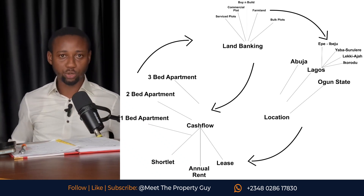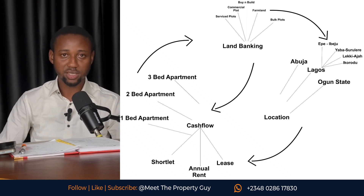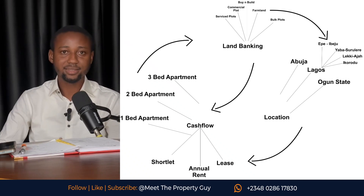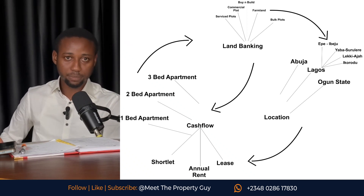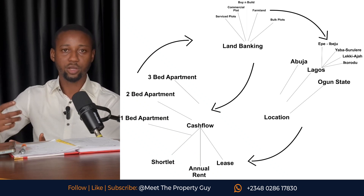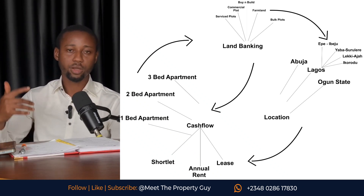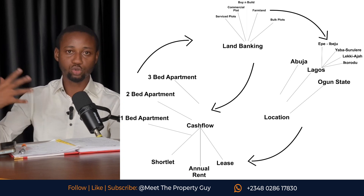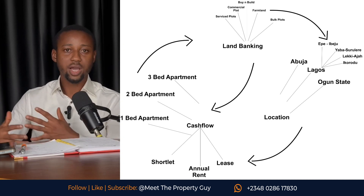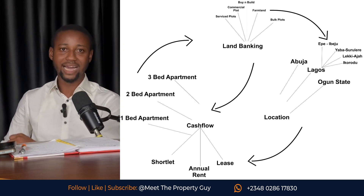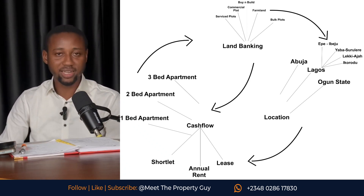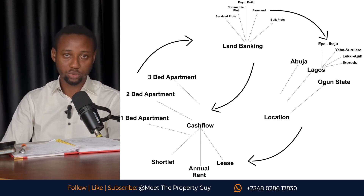After you've spread your net and you have different investments, different projects where you've put your money, and they start yielding profits — your apartment is rented out, they're collecting your rent, your land has matured and you've made profits — compounding is the point where you collect those profits and return them back into your investment to make more profit.